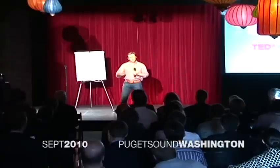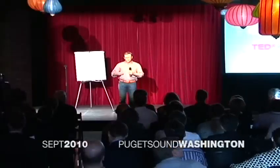How do you explain when things don't go as we assume? Or better, how do you explain when others are able to achieve things that seem to defy all of the assumptions? For example, why is Apple so innovative? Year after year after year, they're more innovative than all their competition, and yet they're just a computer company. They're just like everyone else. They have the same access to the same talent, the same agencies, the same consultants, the same media. Then why is it that they seem to have something different?